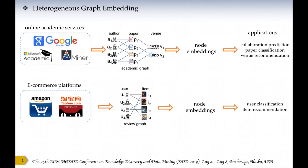There are many heterogeneous graph-based online systems. For example, online academic services such as Google Scholar, Microsoft Academic, and AMiner can be seen as heterogeneous graphs with author, paper, and venue nodes, and collaboration, citation, and publication relationships. By learning low-dimensional node embeddings, we can solve problems such as collaboration prediction, paper classification, and venue recommendation.